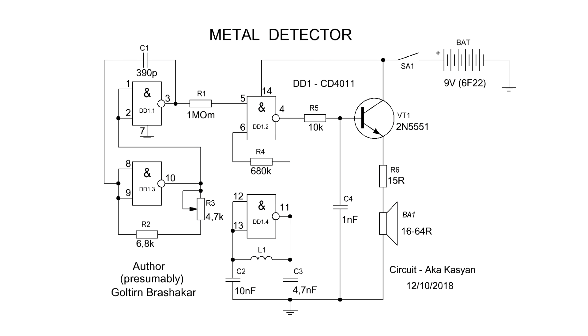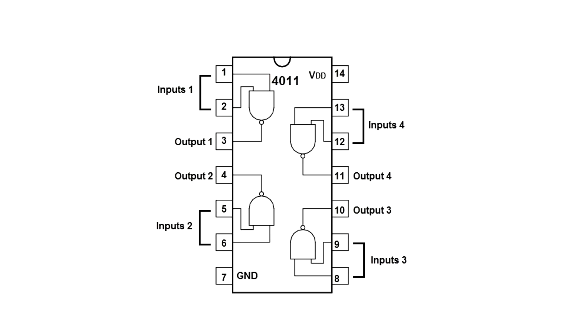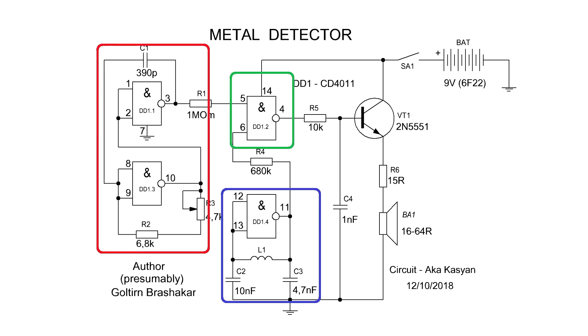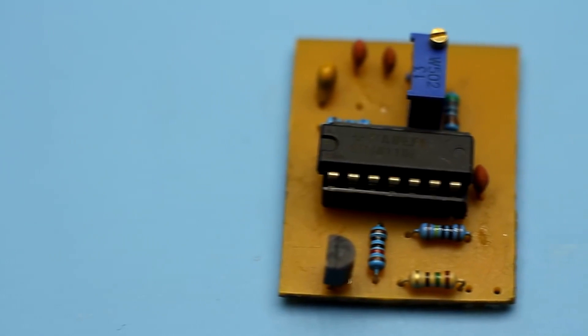Let's look at the circuit. Device is built on the basis of CMOS chip CD4011, which contains four logical elements, 2AND-NOT. The circuit consists of four parts, reference and search generators, a mixer and a signal amplifier. The latter is built just on one transistor.